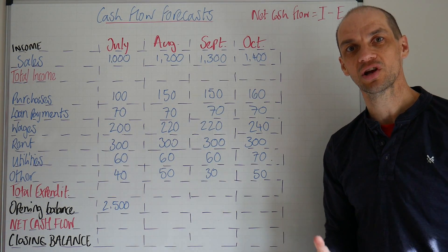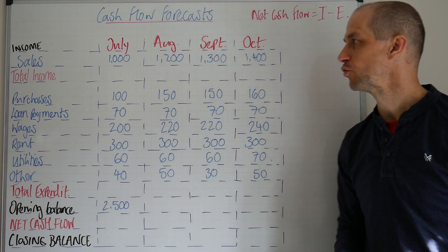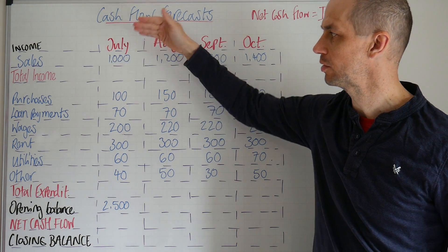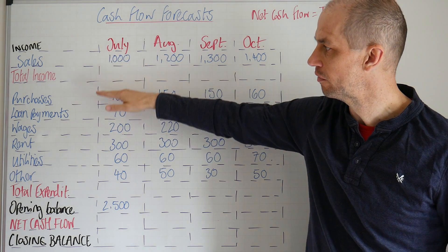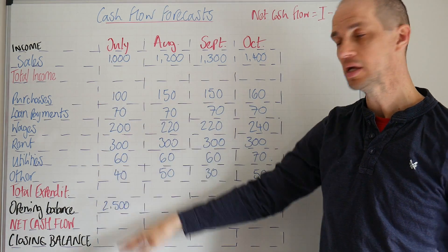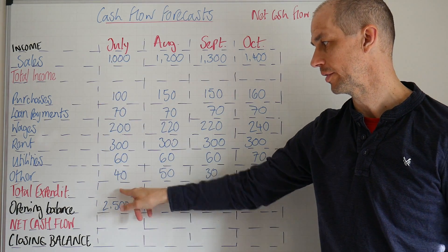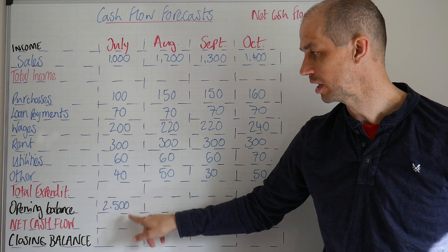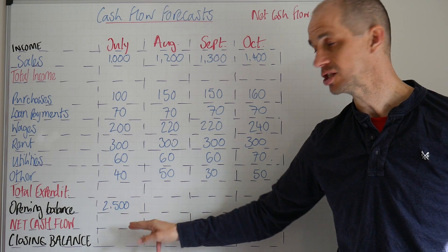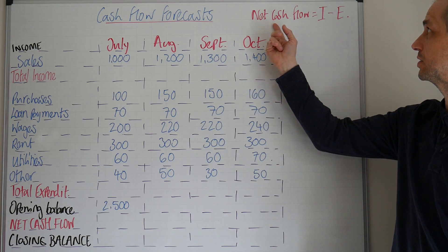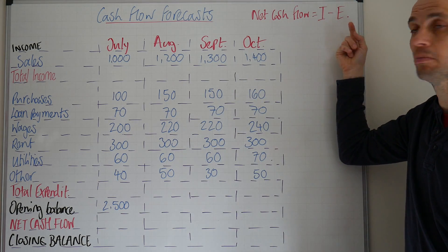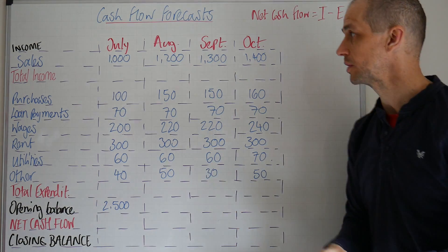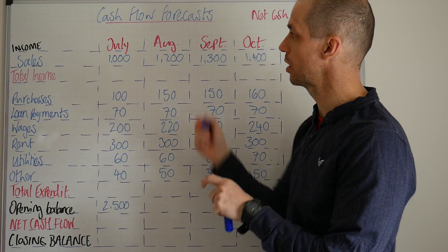Let's have a look at cash flow forecasting. On our cash flow forecast you can see it breaks down to sales and total income, then we've got various items of expenditure and total expenditure. The forecast will also highlight the opening balance, the net cash flow position — which is calculated by total income minus total expenditure — and finally our closing balance.